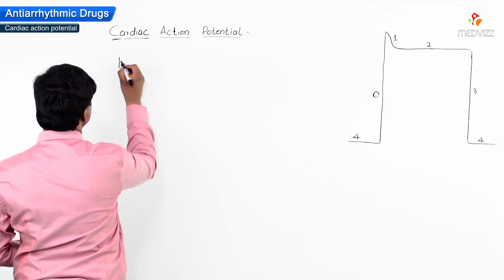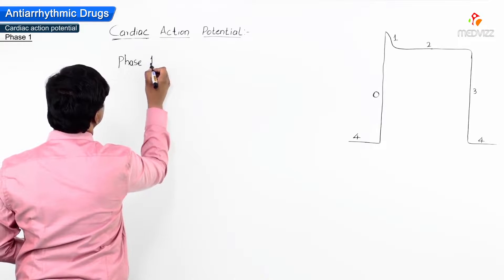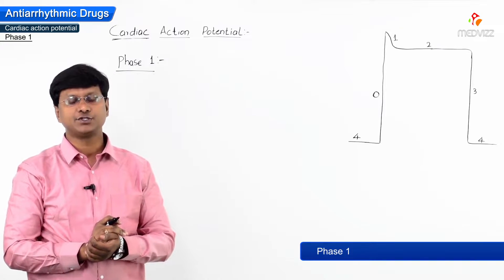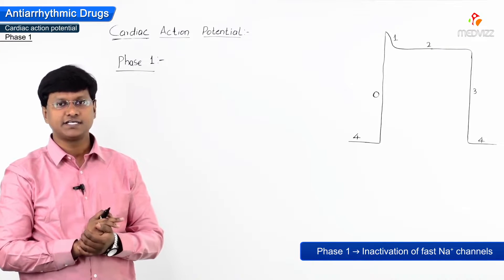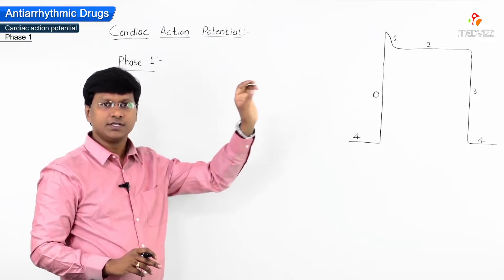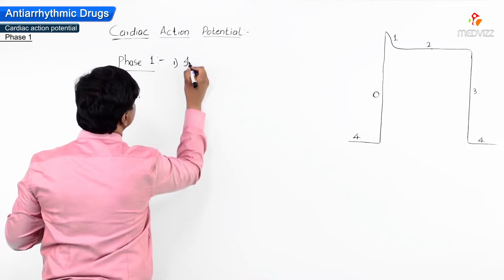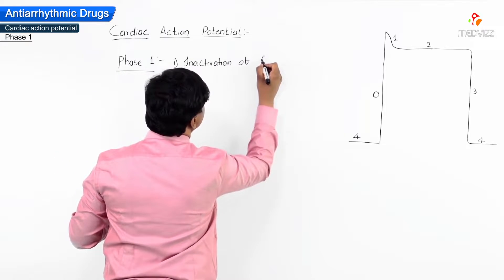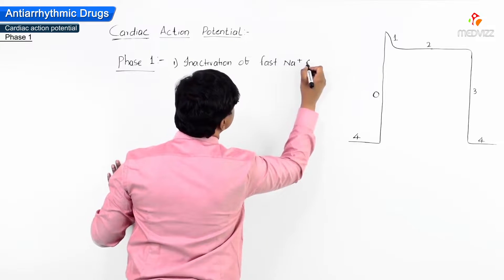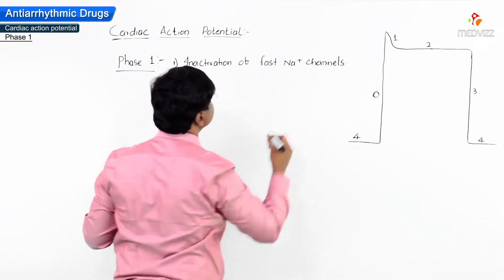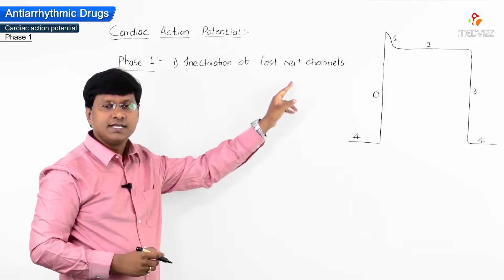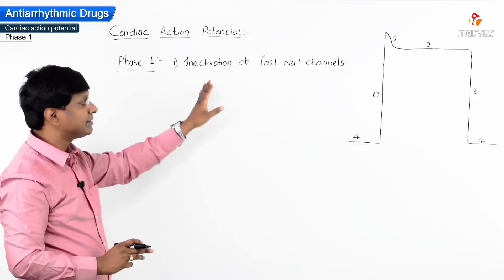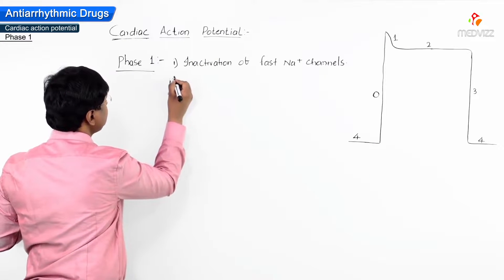Let me discuss phase 1 of the cardiac action potential. Phase 1 occurs with the inactivation of the fast sodium channels. Once there is inactivation of the fast sodium channels, in spite of whatever might be the stimulus, the sodium channels do not get opened — they become inactivated. That is the first thing.